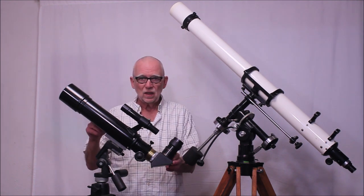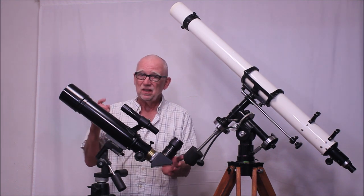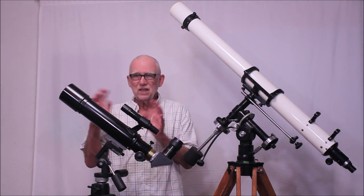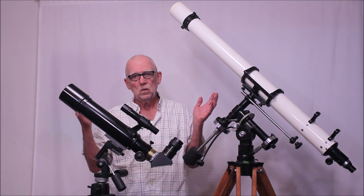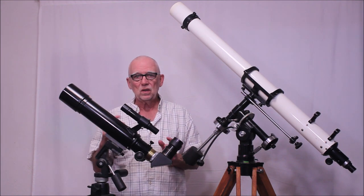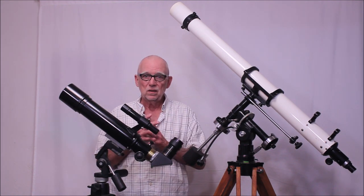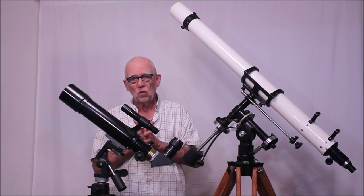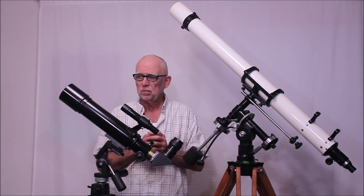Now, this thing, unlike the 758, the E758 did not have ED apochromatic glass. This thing has ED glass. So it gives you essentially apochromatic performance. Very low color performance.